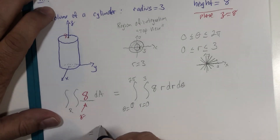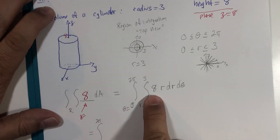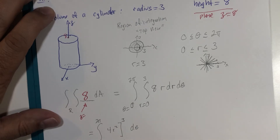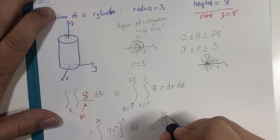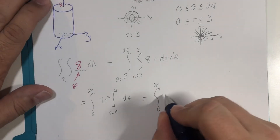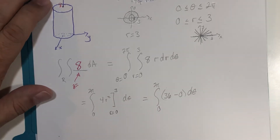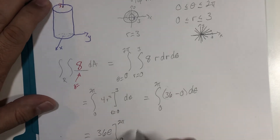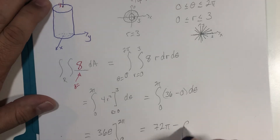Let's evaluate. The antiderivative of 8r is 4 multiplied by r squared. R goes from 0 to 3: 3 squared is 9, and 9 times 4 is 36. Zero times anything is 0, so we get 36 minus 0, which is just 36. The next integral gives us 36θ evaluated from 0 to 2π, which ends up being 72π minus 0 — giving us 72π units cubed.